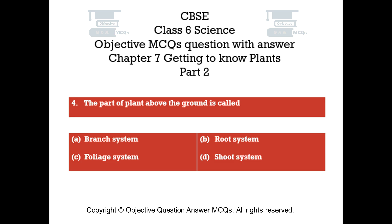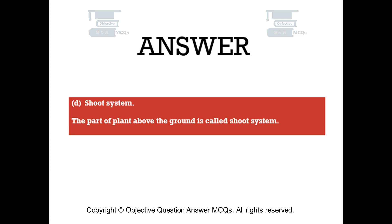Question number four. The part of the plant above the ground is called: Option A branch system. Option B root system. Option C foliage system. Option D shoot system. The right answer is option D — shoot system. The part of the plant above the ground is called shoot system.